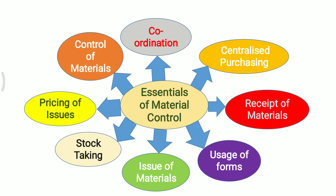Next is Control of Materials. Proper accounting and records are to be maintained to avoid wastage of materials during the production process. These are the essentials of material control. Thank you.